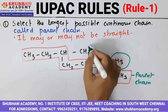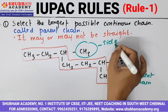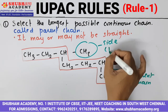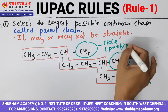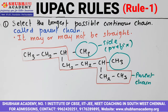Once you are done with the longest chain, this longest chain will be called the parent chain. Whatever else is left is your side chain and it will form the prefix. We have already discussed in the first video that the prefix is whatever comes before the word root. So once you have understood how to select the longest chain, now we will see how to name the compound. First we will see very simple compounds and then we will increase the level.